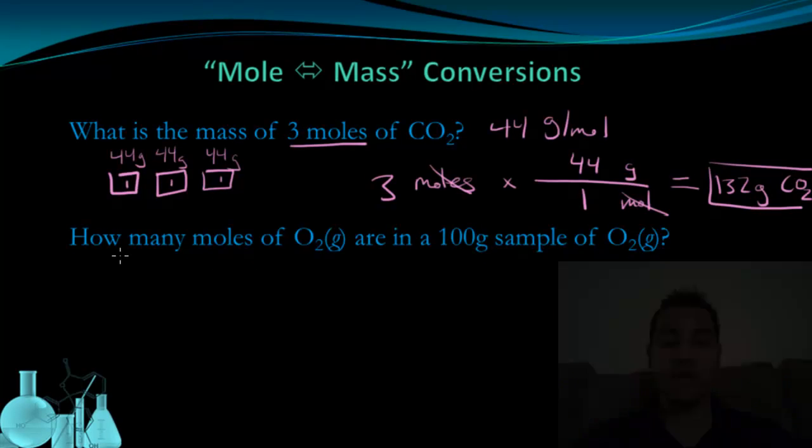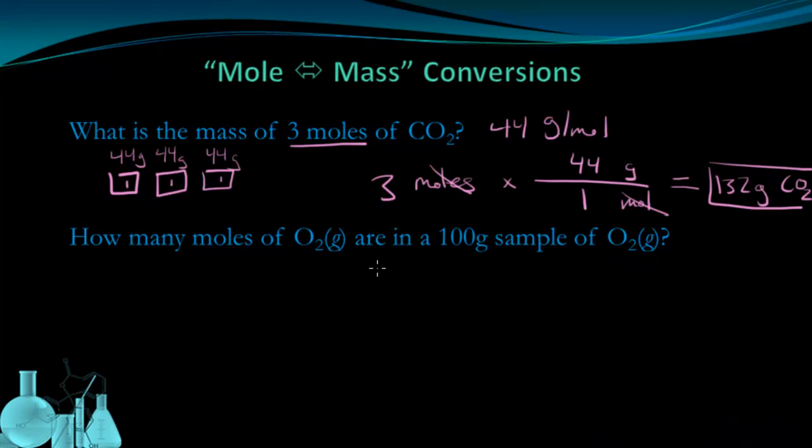Let's look at the second question. How many moles of oxygen gas are in a 100 gram sample of oxygen gas? The first thing we have to do is figure out the molar mass of O2. Well oxygen is 16, and there are clearly two of them in this molecule, so that's going to give me 32 grams per mole.